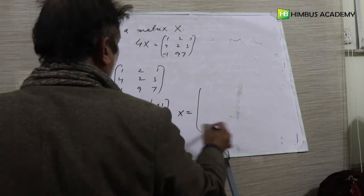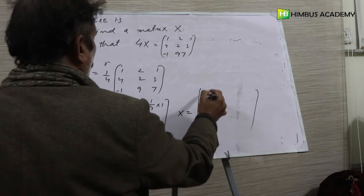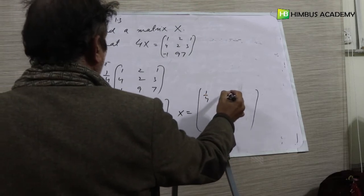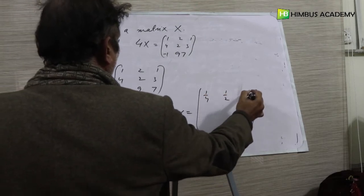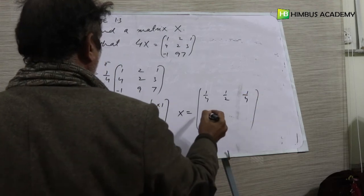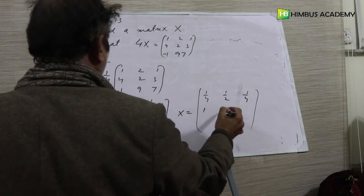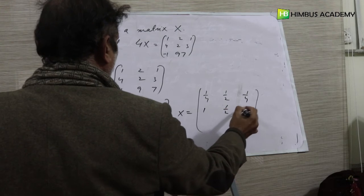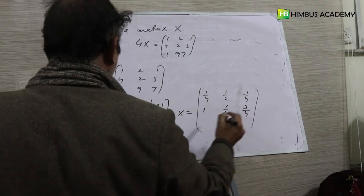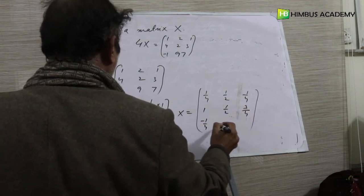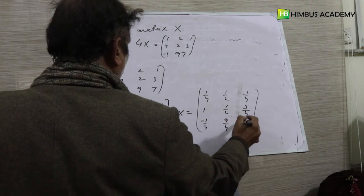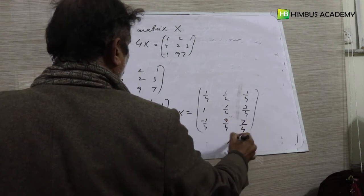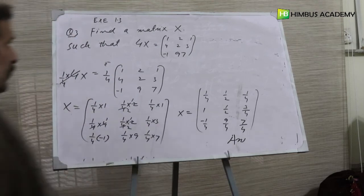So we get X as 1 over 4, 1 over 2, 1 over 4, 1, 1 over 2, 3 over 4, minus 1 over 4, 9 over 4, 7 over 4. This is all about question number 3.